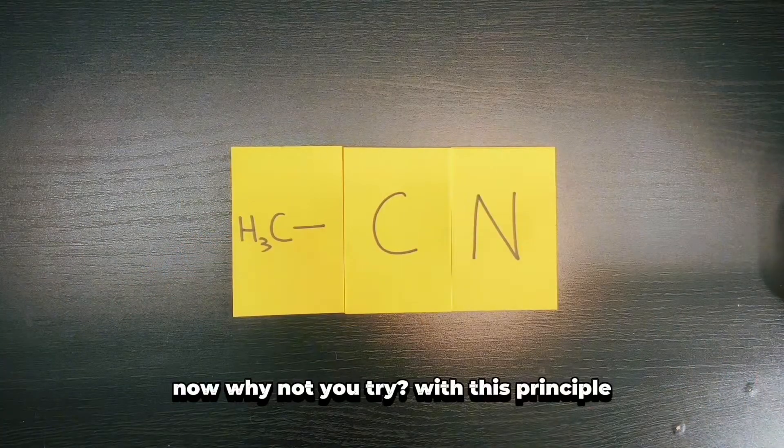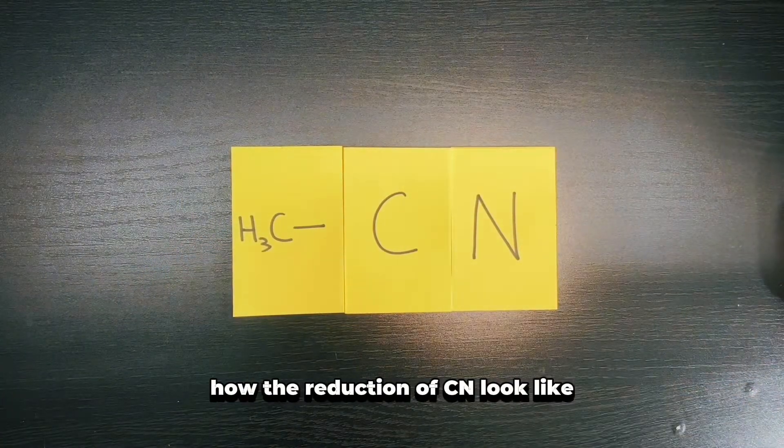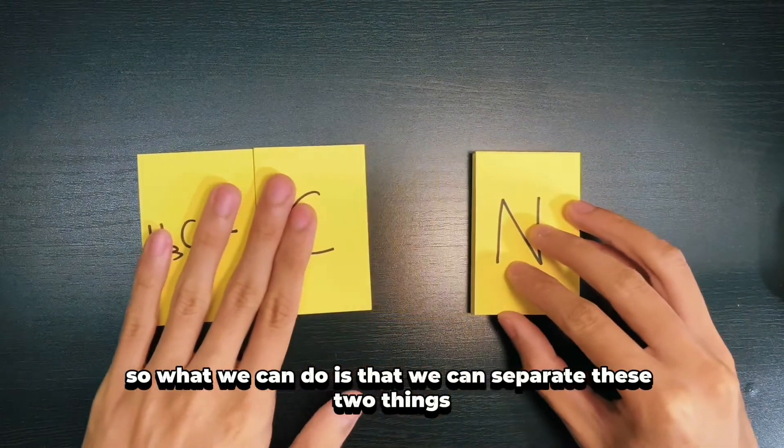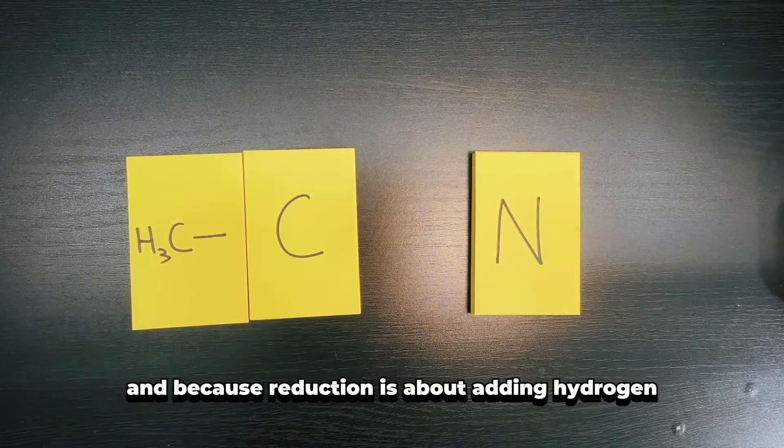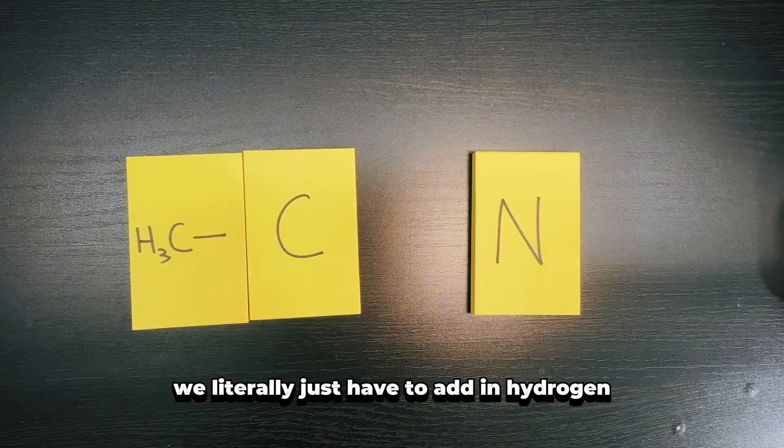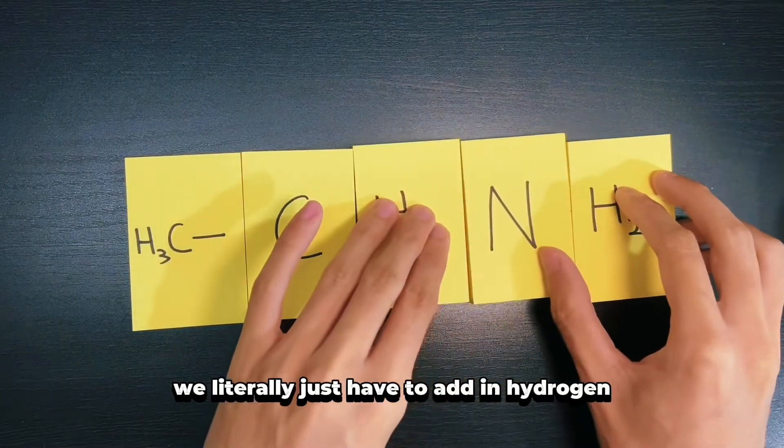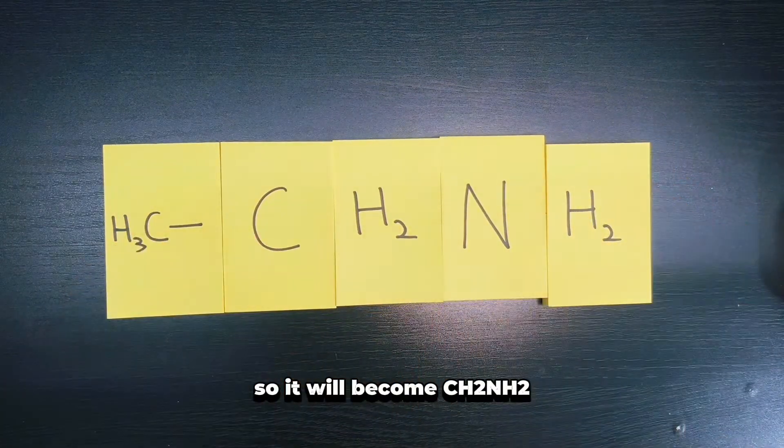Try with this principle: how does the reduction of CN look like? We can separate these two things and because reduction is about adding hydrogen, we literally just have to add in hydrogen so it will become CH2 and NH2.